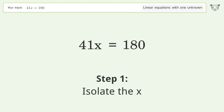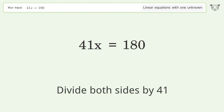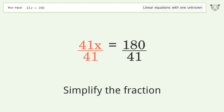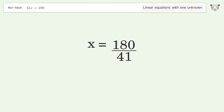To isolate x, divide both sides by 41. Simplify the fraction, and so the final result is x equals 180 over 41.